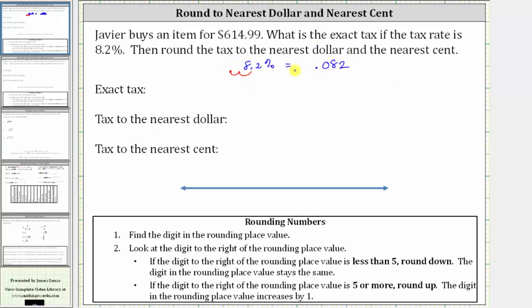However, we often place a zero in the ones place value and get the decimal as 0.082. 0.082 is the decimal form of 8.2%. And now to find 8.2% of the sale item, we multiply 0.082 and $614.99.